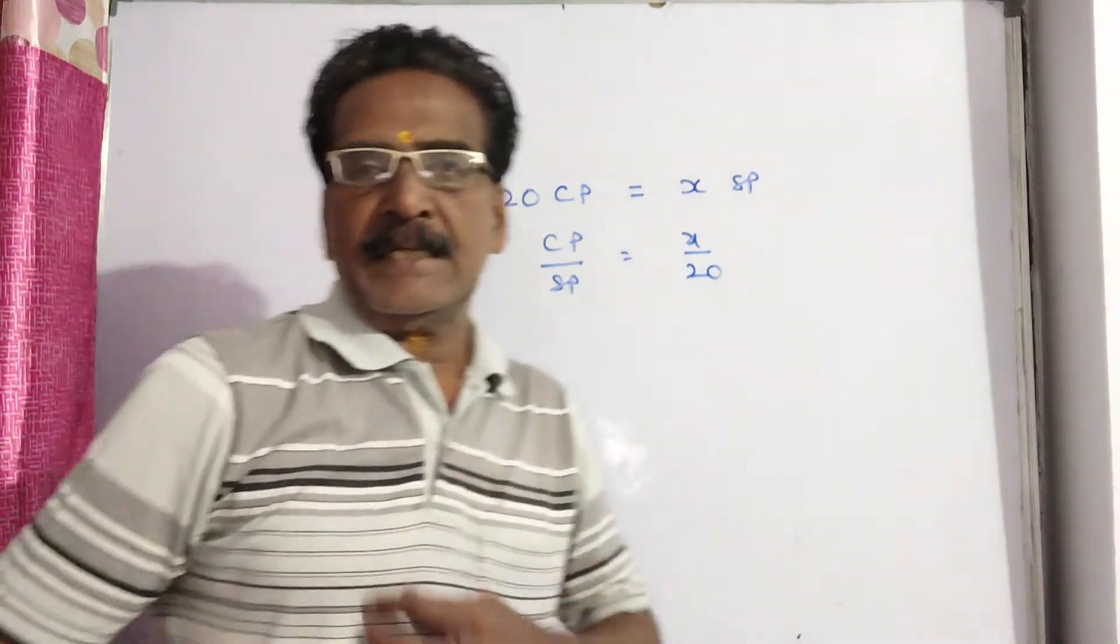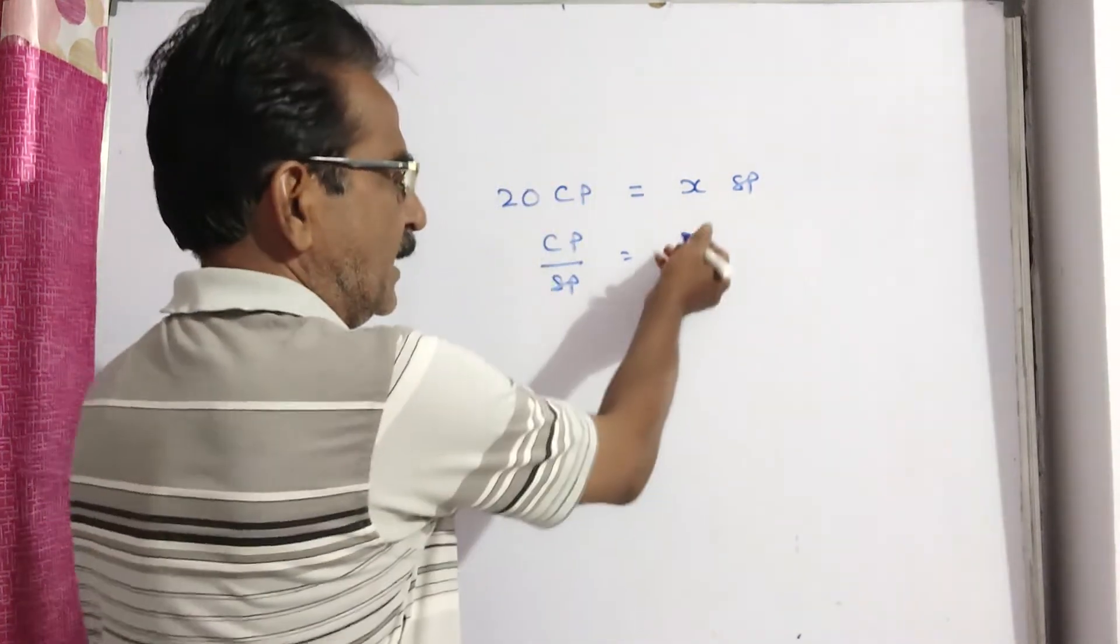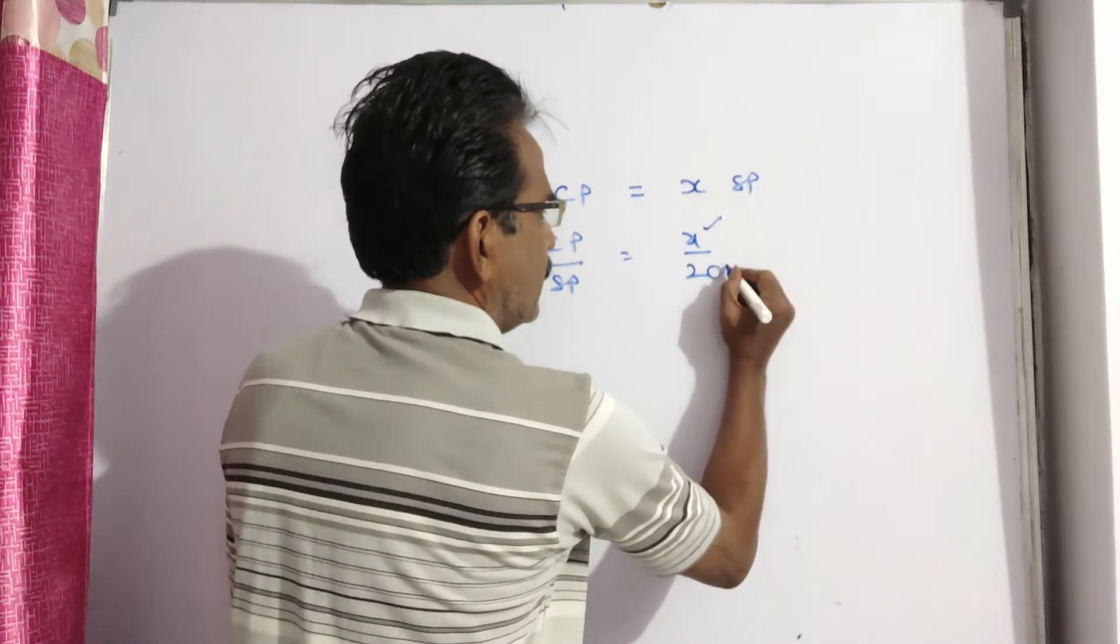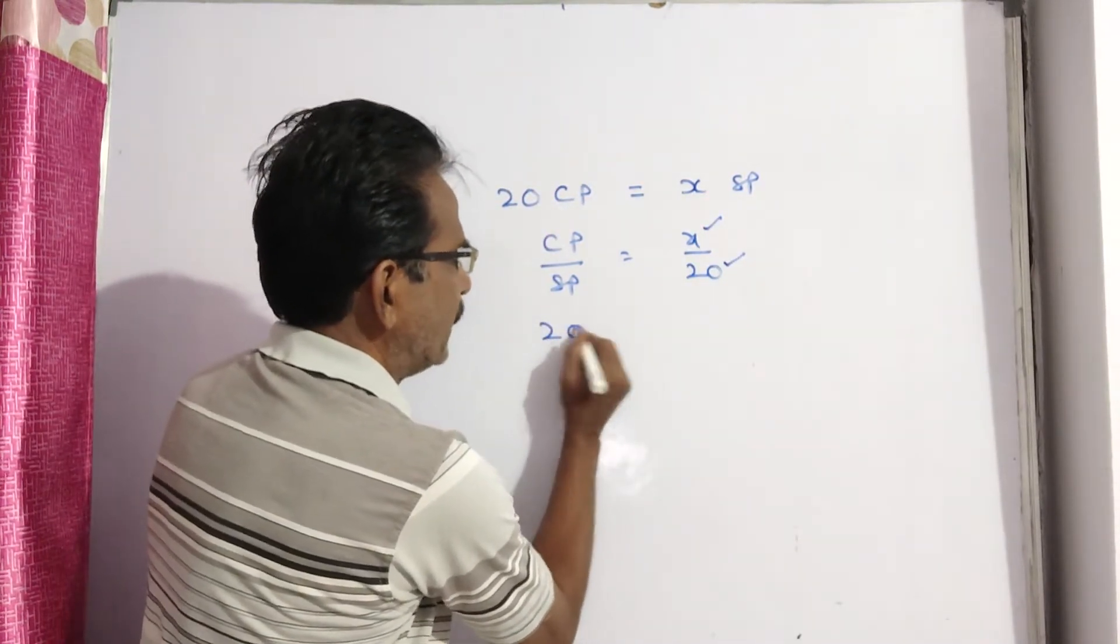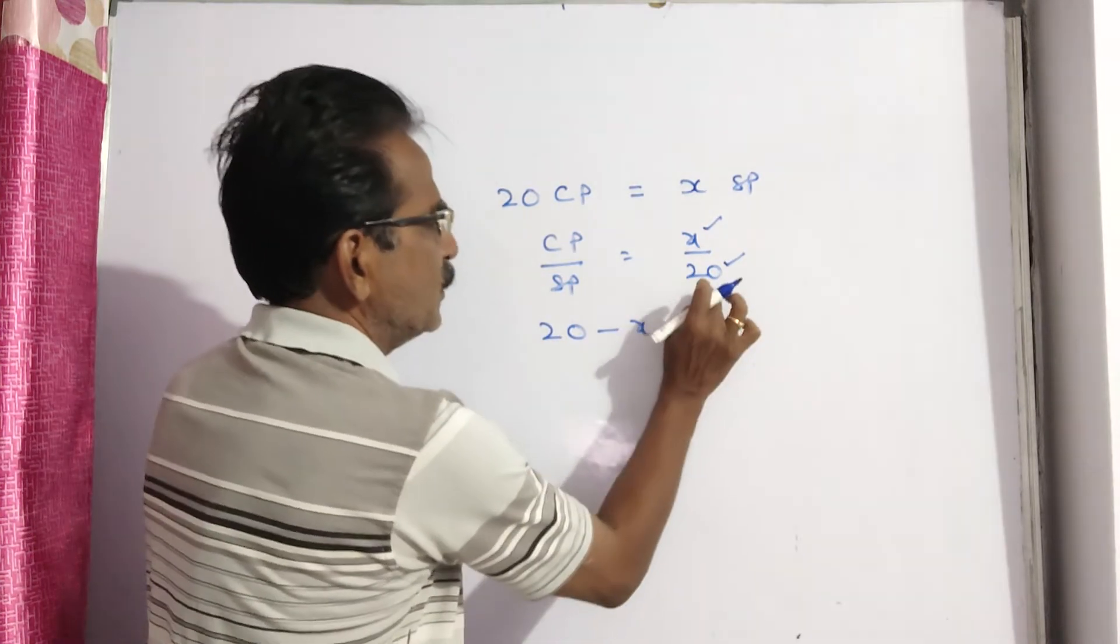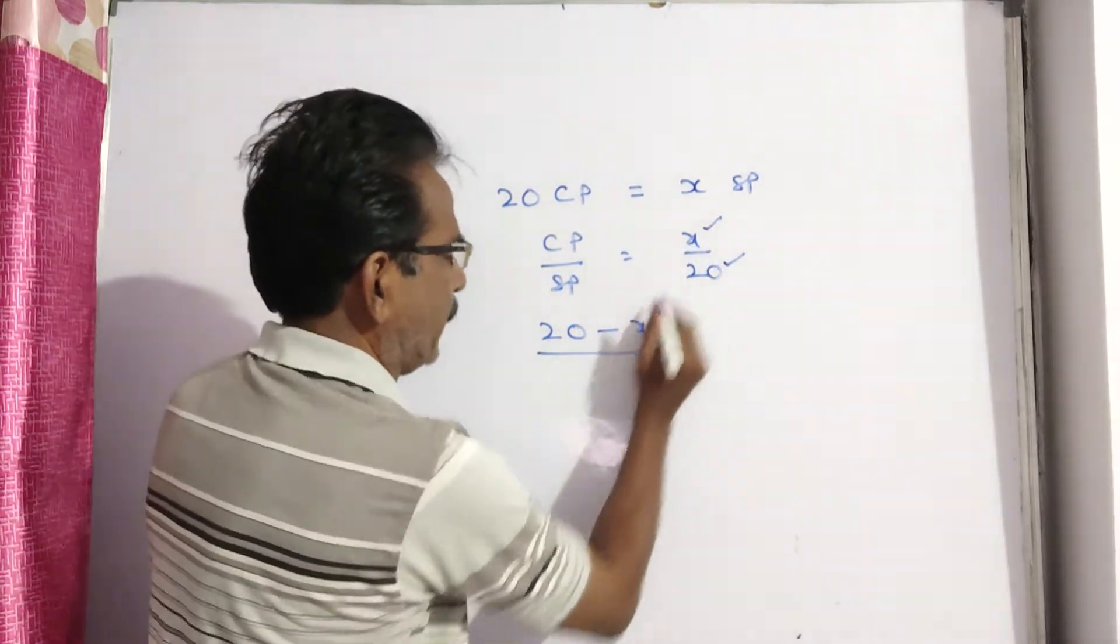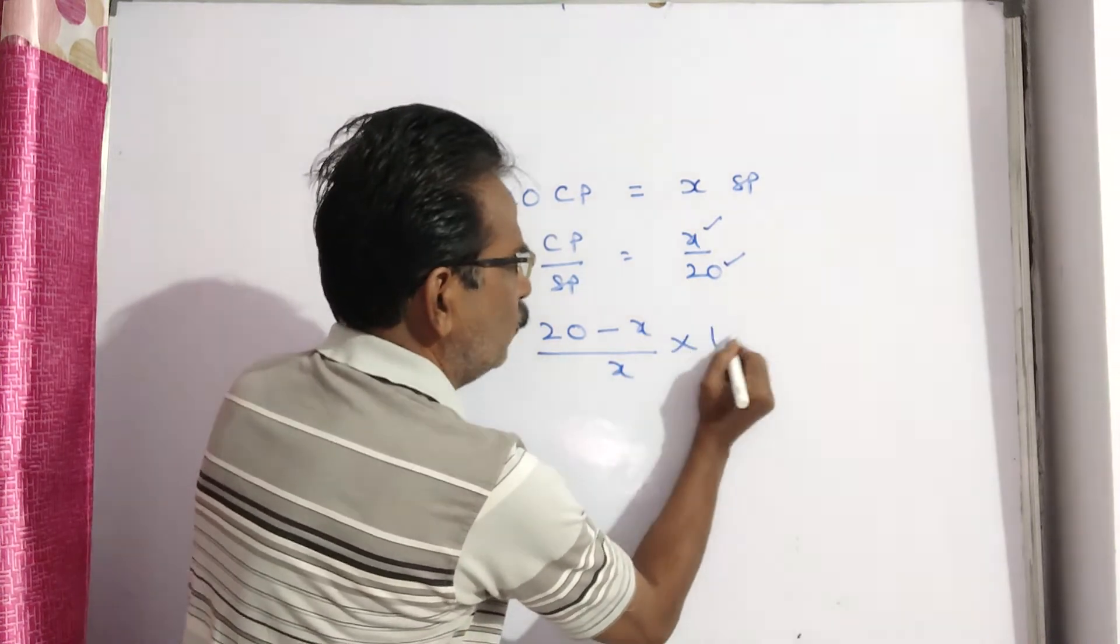Now, here we have a profit of 25%. Let us calculate. This is cost price, this is selling price. How we get the profit percent: selling price minus cost price, divided by cost price, into 100.